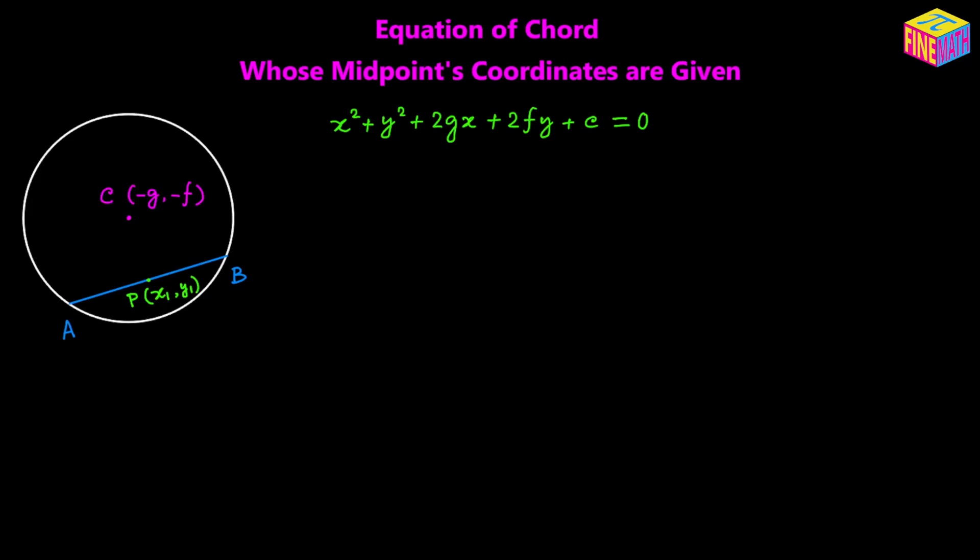We assume that x sub 1 and y sub 1 are known quantities provided in the question, and that the equation of the circle has been provided. For the derivation, I am going to join the point C with point P. Since P is the midpoint of the chord and CP is the line drawn from the center of the circle onto the chord, bisecting it, this line will be perpendicular to the chord — as we have already seen in a previous theorem. So CP is perpendicular to AB.